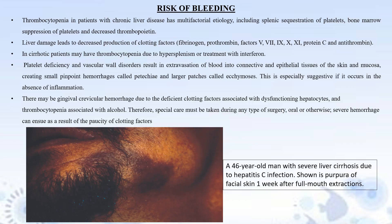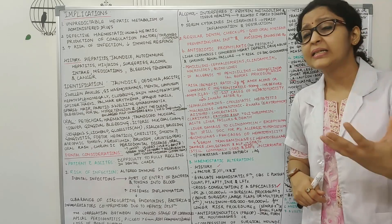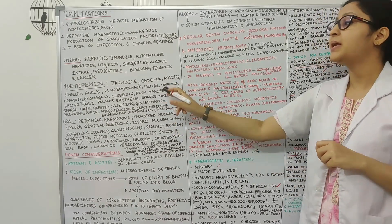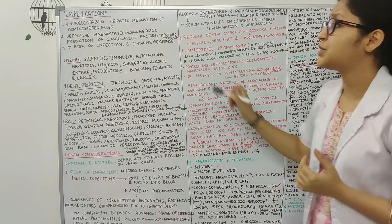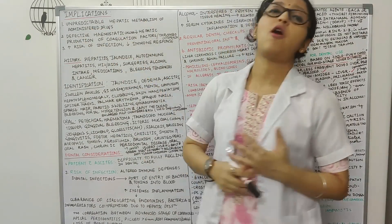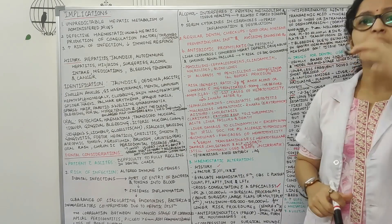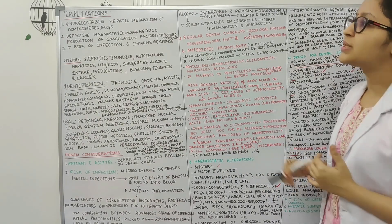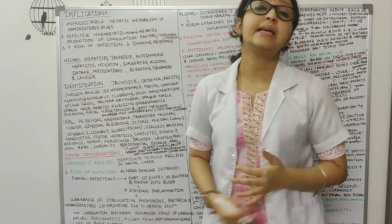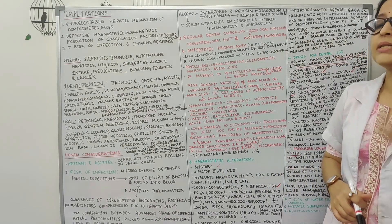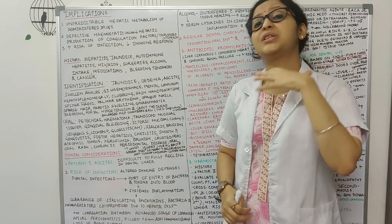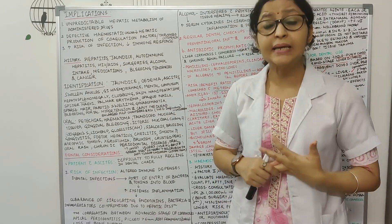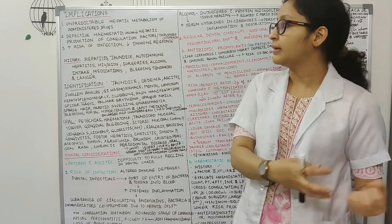That is the number of platelets, the platelet count in such patients decreases. It decreases because there is hypersplenism in these patients. Then another thing that we see in these patients is increased risk of infection. The immunity of the patient is reduced and therefore there is increased risk of infections in such patients. And we need to consider these three important points whenever we are treating any liver patient in a dental clinic.